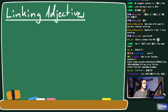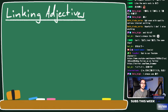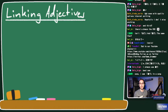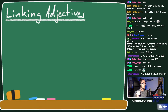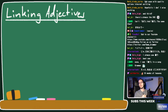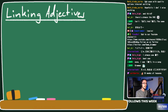Welcome everyone to lesson 10 - we have reached double digits! This is lesson 10 and we're going to talk about linking adjectives. We're going back to do more adjectives, but don't worry because this isn't all that different from what we've discussed in the past. Today we'll learn about the te-form of i-adjectives and how to link both i-adjectives and na-adjectives together.